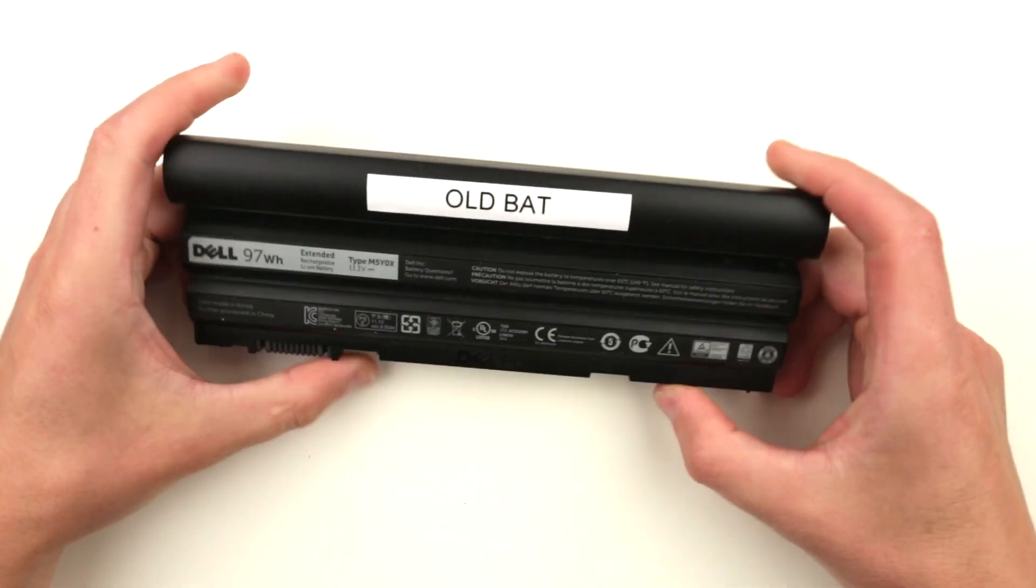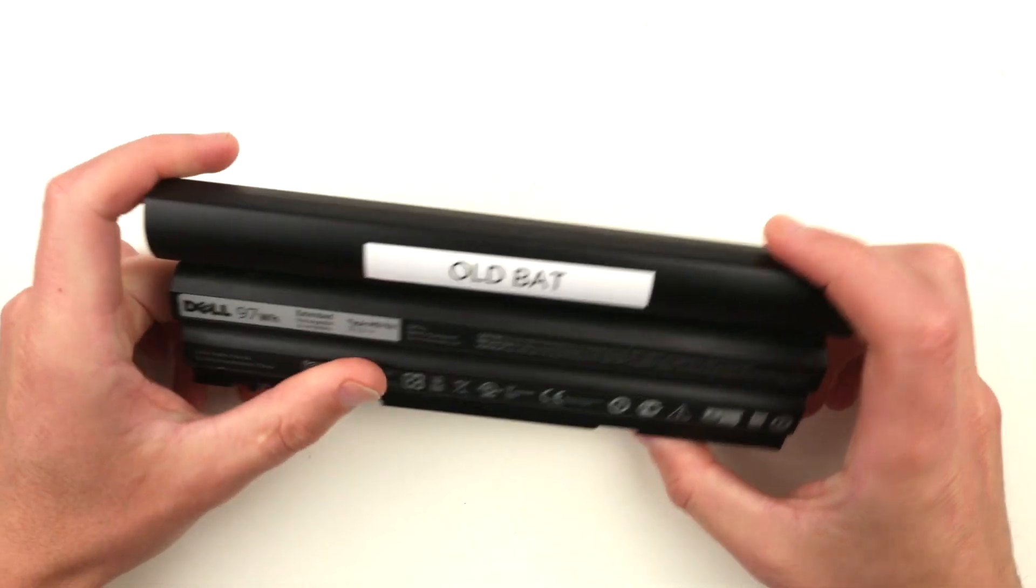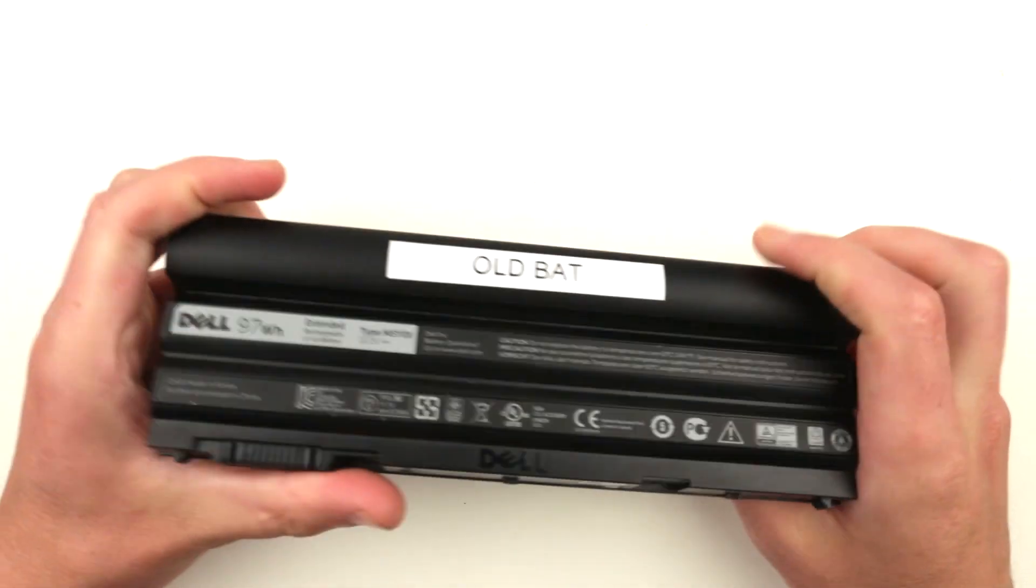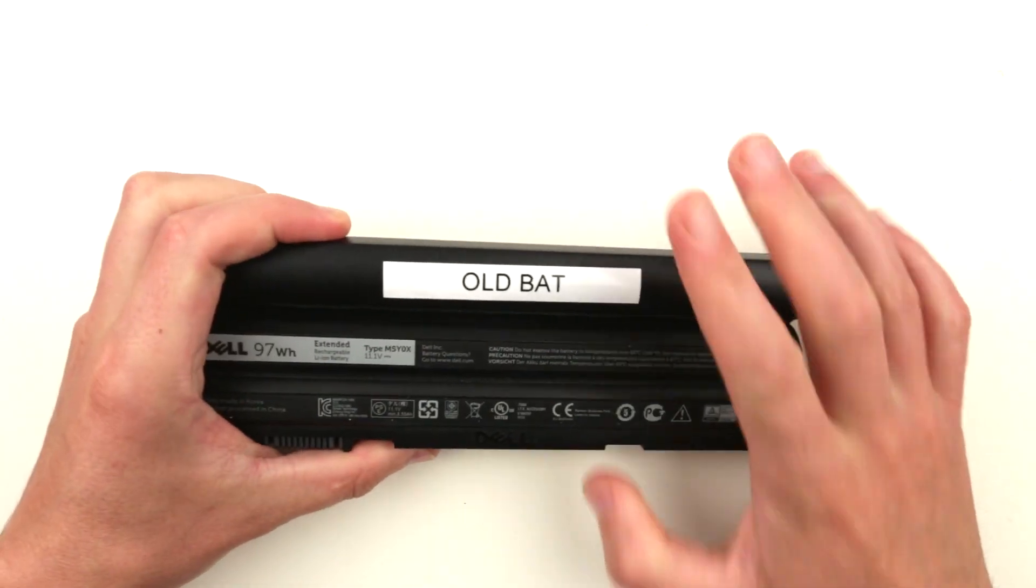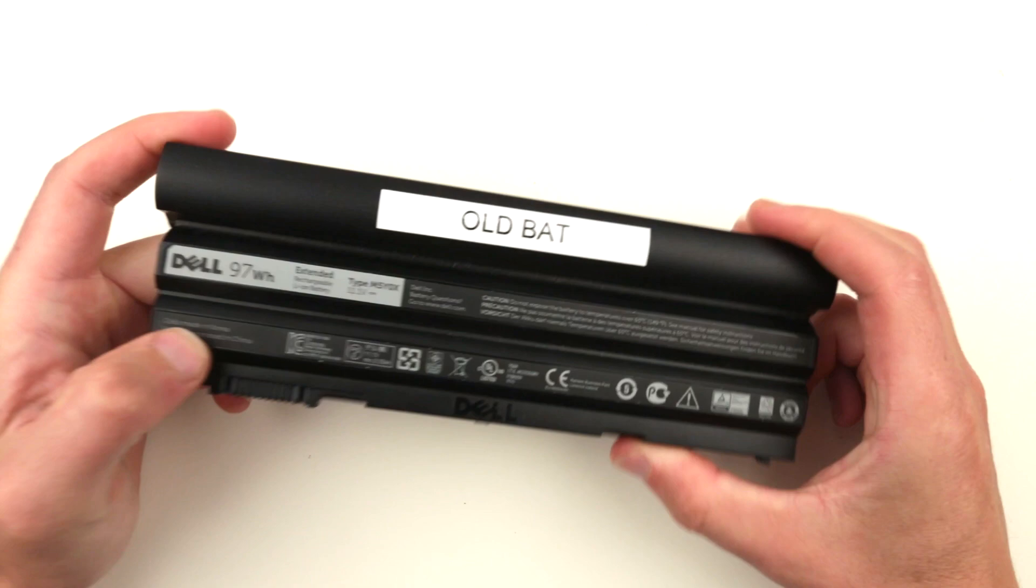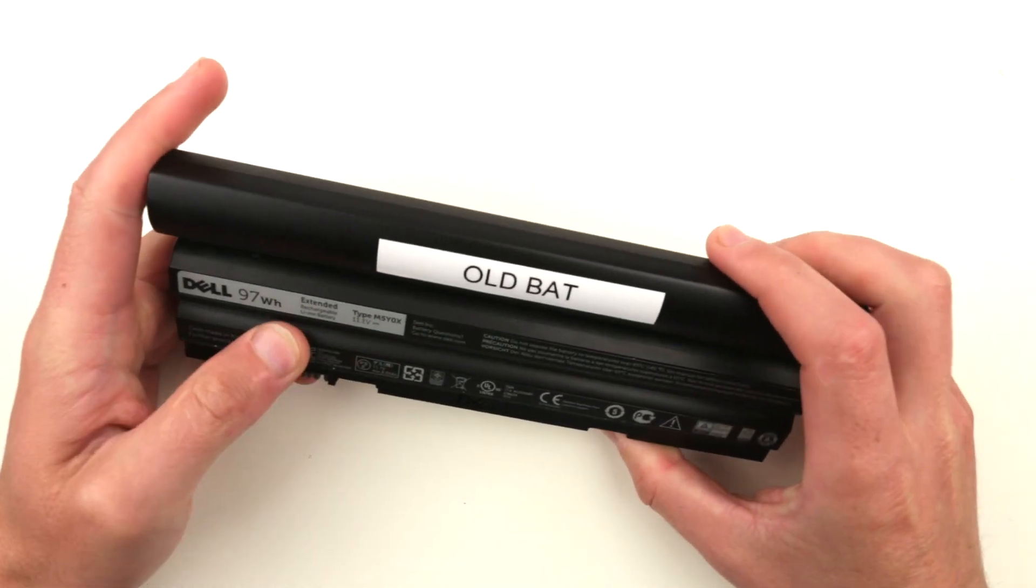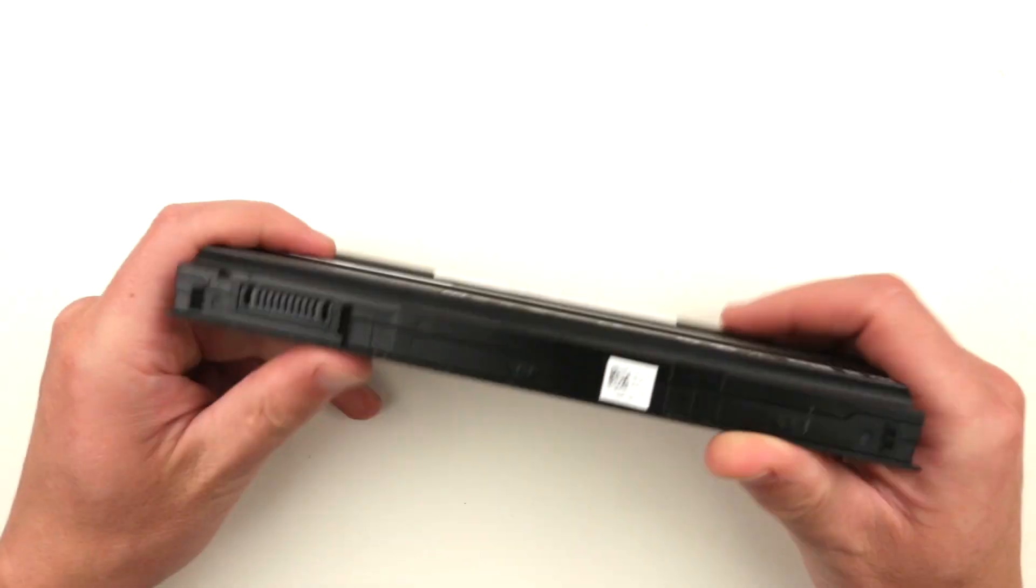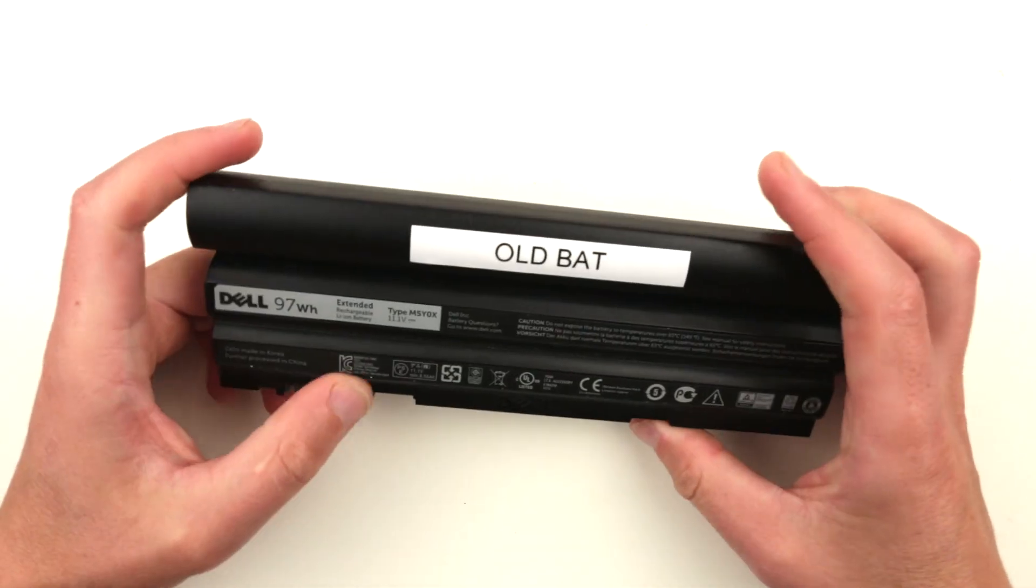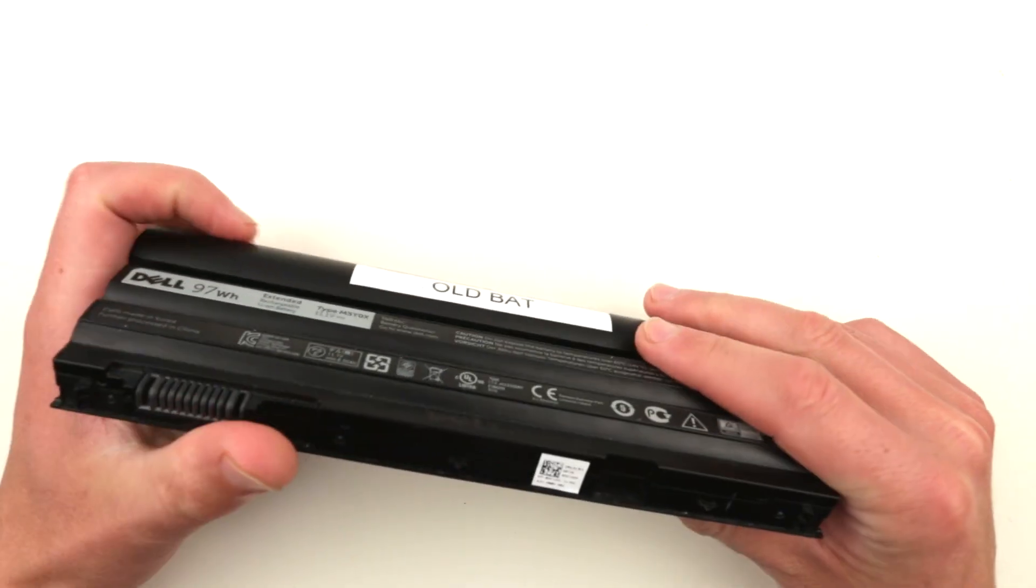Hello guys, today I have an old laptop battery to take a look at. What happened is the laptop refuses to charge this battery anymore. I've put a label on it to indicate this is an old battery that's not going to be charging anymore. When you plug it into the laptop, it stays at 34% and the laptop refuses to charge it.